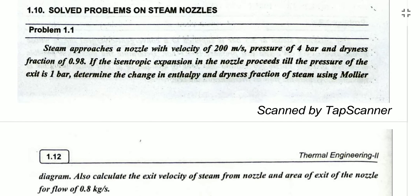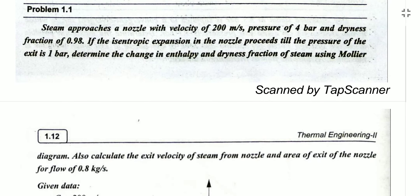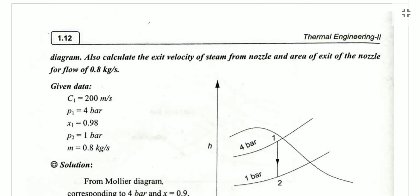Let us solve a problem on steam nozzles. Steam approaches a nozzle with an inlet velocity of 200 m/s, inlet pressure of 4 bar, and inlet dryness fraction of 0.98. The flow is isentropic and the exit pressure is 1 bar. Determine the change in enthalpy, dryness fraction at exit using the Mollier diagram, the exit velocity, exit nozzle area, given mass flow rate is 0.8 kg/s.